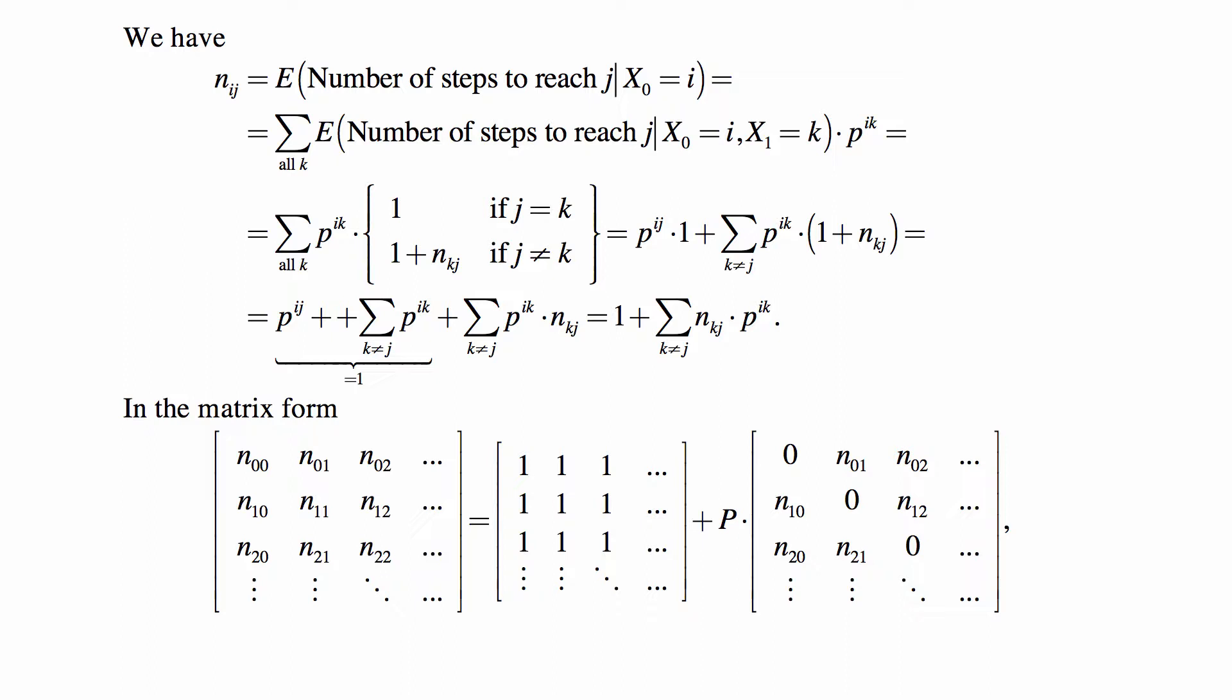Therefore, this is pij times one, plus the summation over k not equal to j of pik times (1 + Nkj). Let's multiply out the (1 + Nkj) by pik in the second term, in the summation, and separate the summation over k not equal to j of pik, and then the second summation of pik times Nkj.